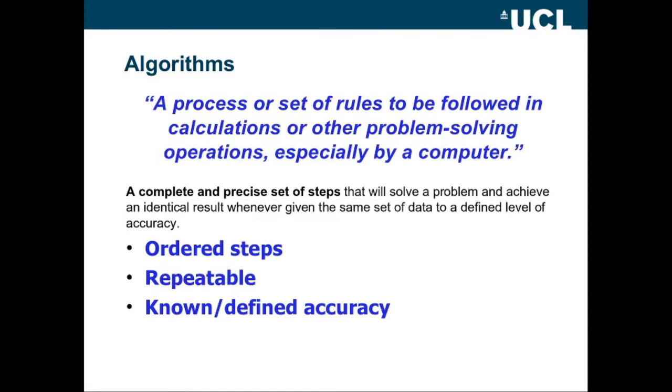Algorithms. The definition of an algorithm in Wikipedia is a process or set of rules to be followed in calculations or other problem-solving operations, especially by a computer. I also defined it in the previous lecture as a complete and precise set of steps that will solve a problem and achieve an identical result whenever given the same set of data to a defined level of accuracy. I made that slightly different definition because of the possibility of using things like random numbers. So, ordered steps, repeatable and known or defined accuracy.